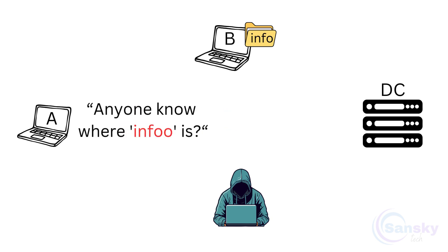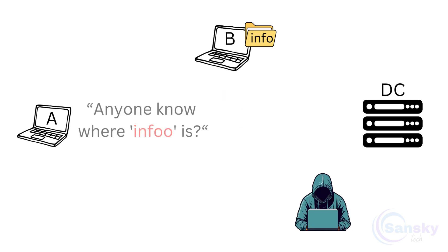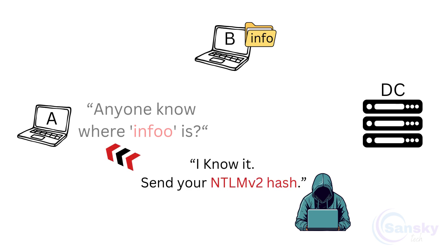This time, A must use the LLMNR protocol to ask others if anyone knows the location of the shared folder. So A broadcasts and asks, does anyone know where this shared folder is? And this is where the broadcast request opens the door for potential attacks. An attacker on the network claims to have access to the info folder and tricks A into sharing its NTLMV2 hash, pretending they can help A access the shared folder.